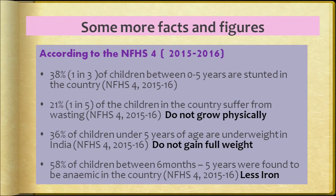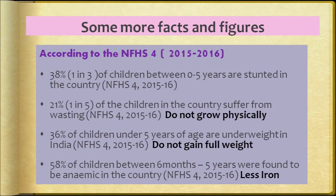Stunting means children are not getting enough food for optimal growth. One in 5 children in the country suffers from wasting — they don't grow properly. 36 percent of children under 5 years of age are underweight. 58 percent of children between 6 months to 5 years were found to be anemic, meaning they didn't get enough nutrients and are low in iron — a consequence of economic deprivation.